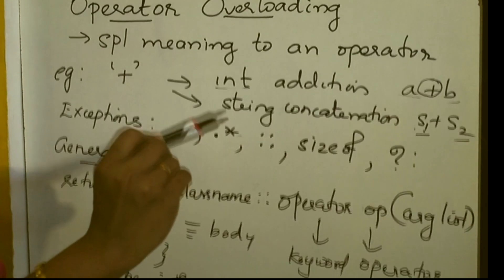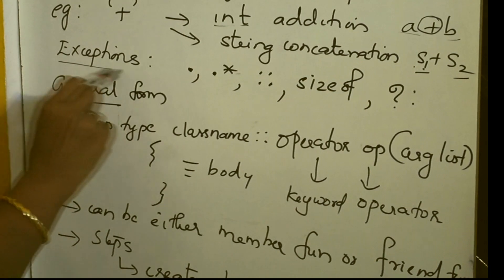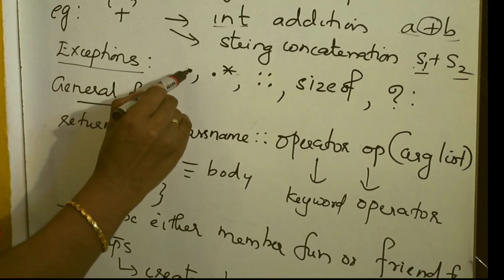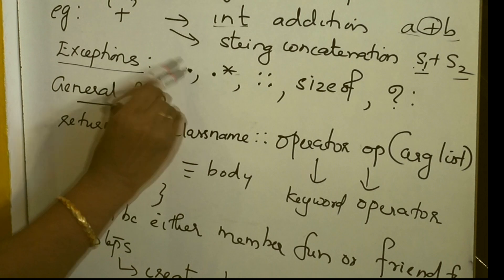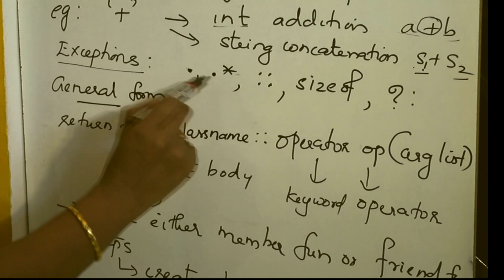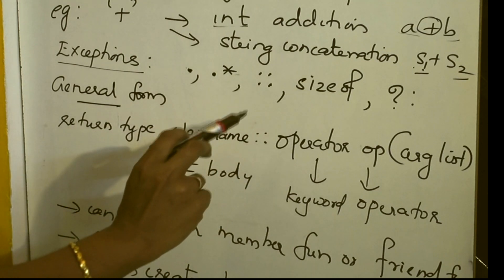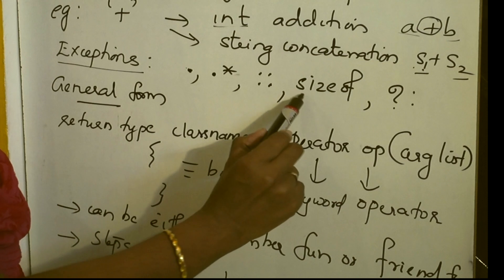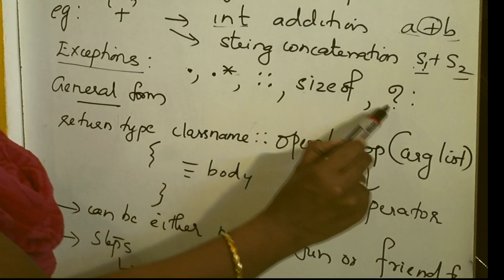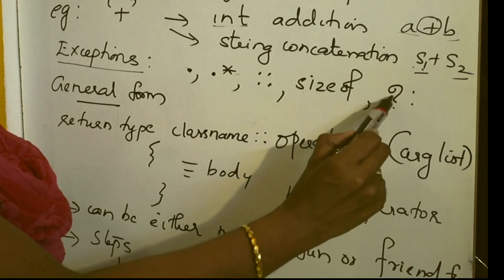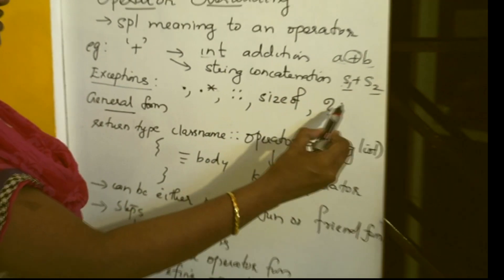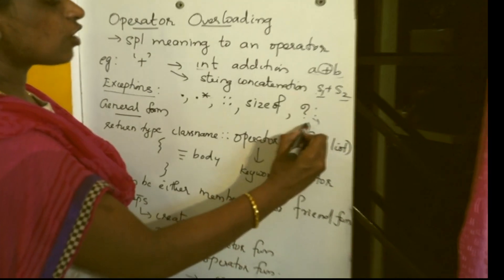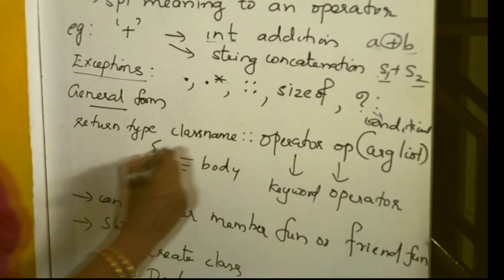We can overload almost all operators, but there are some exceptions. The first exception is class member access operators — the dot operator used to access class members, and dot-star used with pointers. These two cannot be overloaded. The next exception is the scope resolution operator, which also cannot be overloaded. Then the sizeof operator cannot be overloaded, and the conditional operator — which checks a condition and executes the first or second statement based on true or false — also cannot be overloaded.